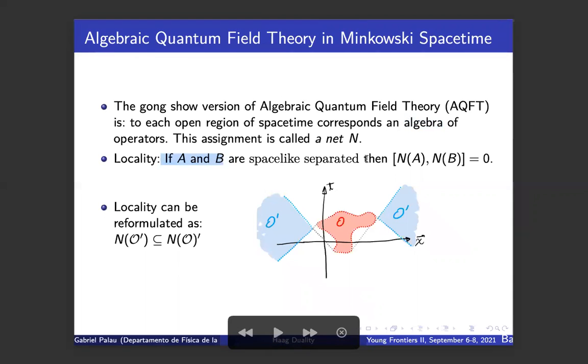This theory associates to each region of spacetime an algebra corresponding with the physical operations performed in the region. Basically, this algebra is the algebra generated by all fields smeared out with functions whose support is in the region in question. It's called the net. In order for this net to have some physical meaning, it must satisfy some physical axioms such as isotony, additivity, Poincaré invariance. But for question of time, I will only introduce locality. Locality says that observables associated to spacelike separated regions must commute.